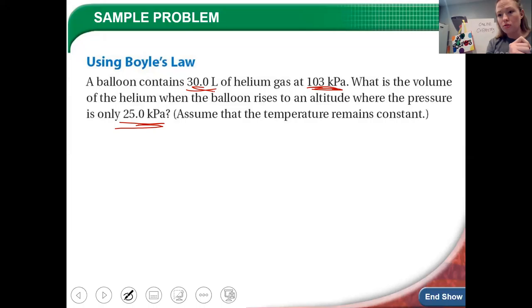Our first volume, our initial volume, we call V1. Our initial pressure, we call P1. And then we end up with a final pressure. We call that P2.